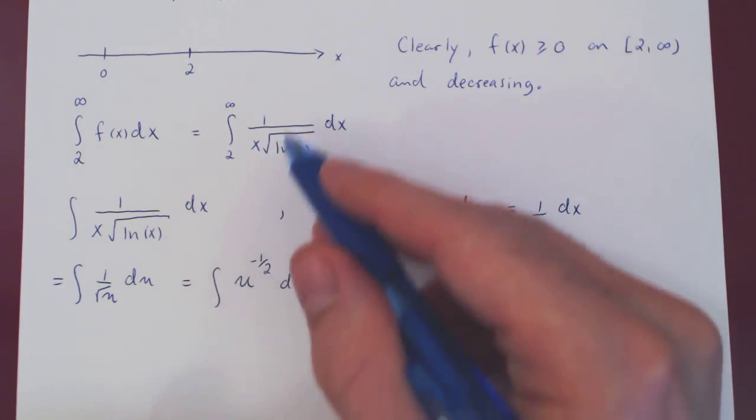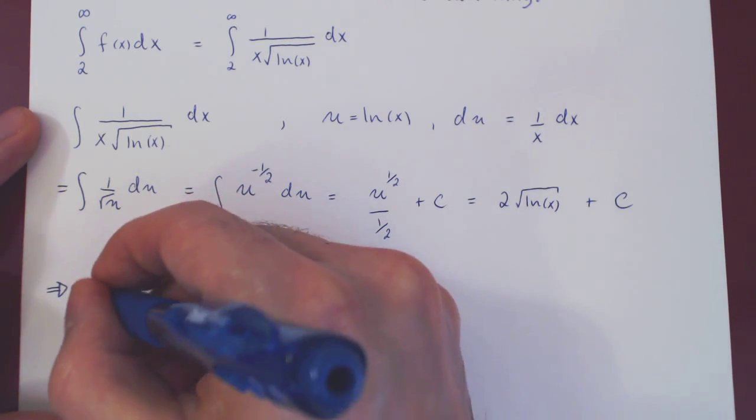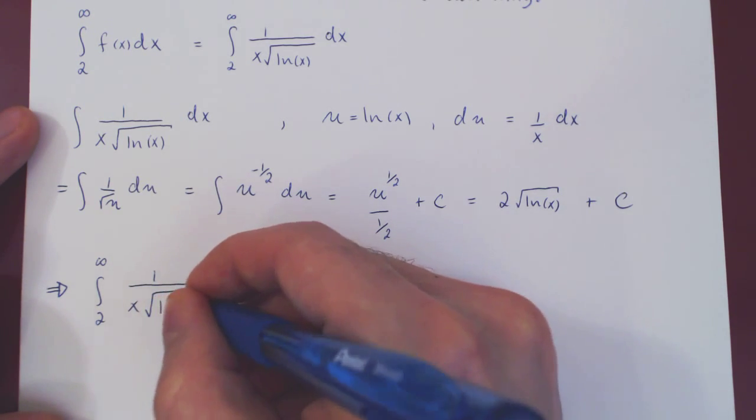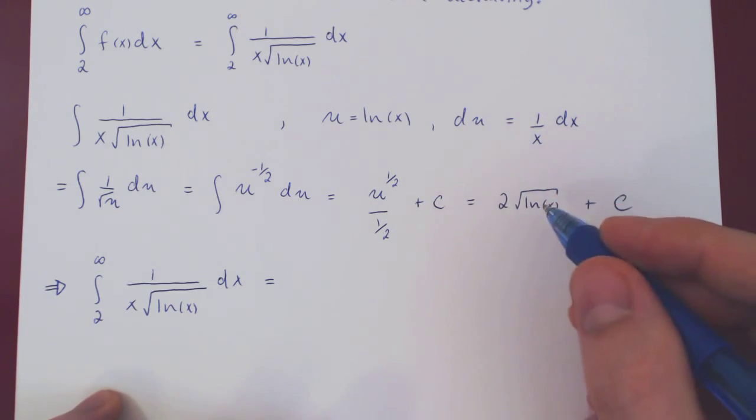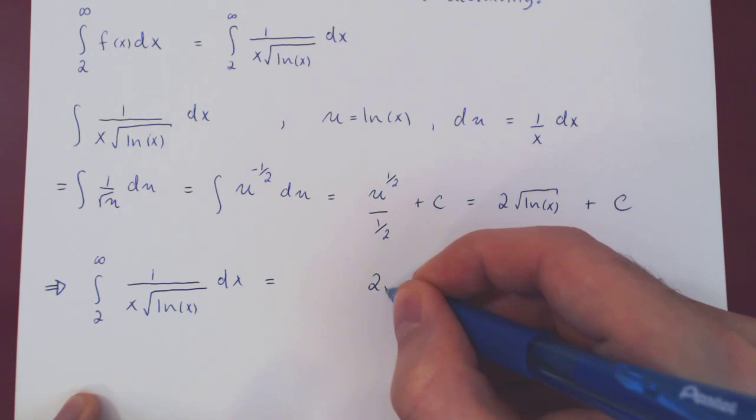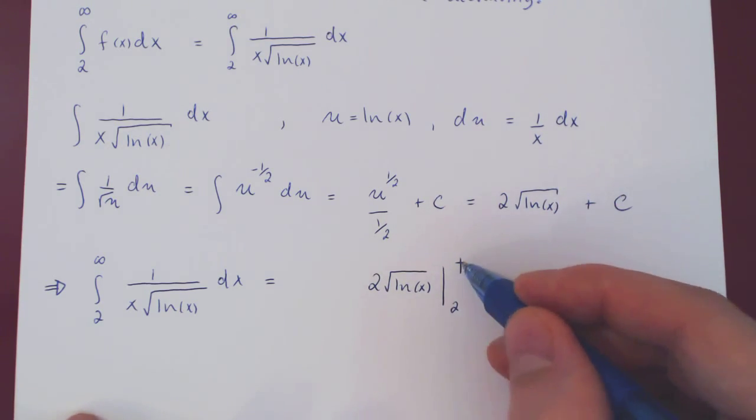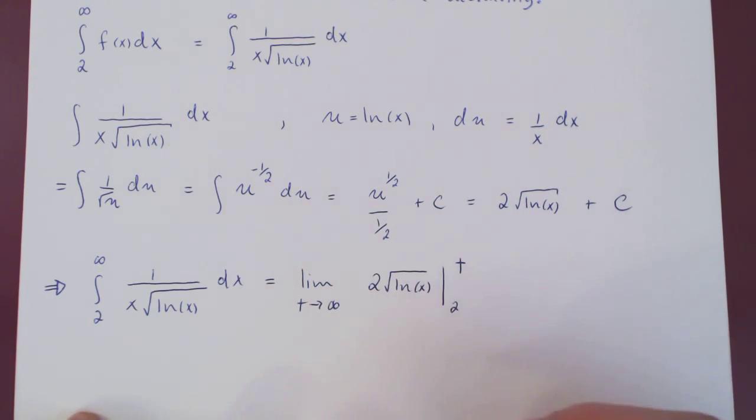So the integral from 2 to infinity of f of x is, well, now that we have our antiderivative, we can evaluate this from 2 to t. And then, of course, we have to let t approach positive infinity. Let's see what happens.